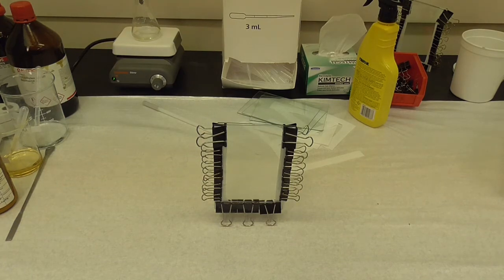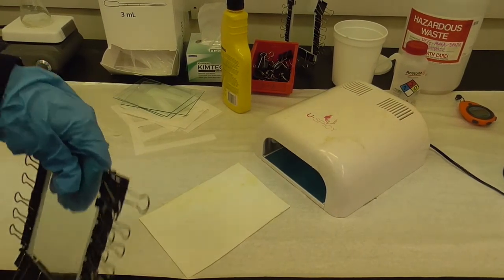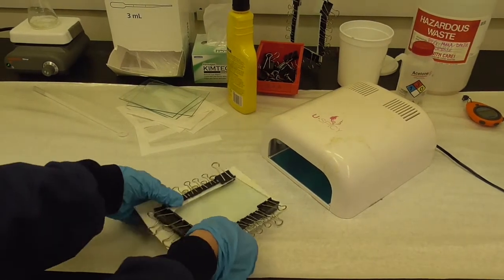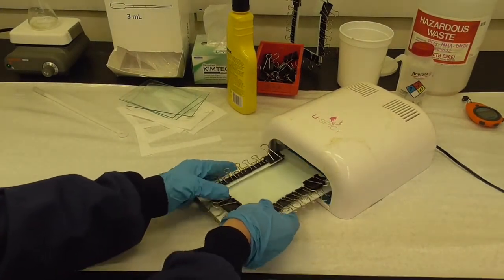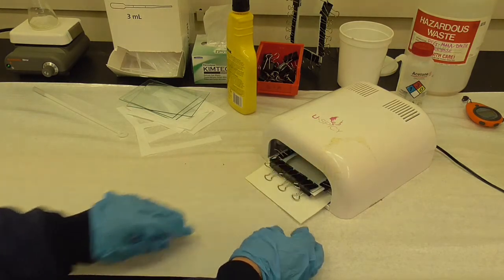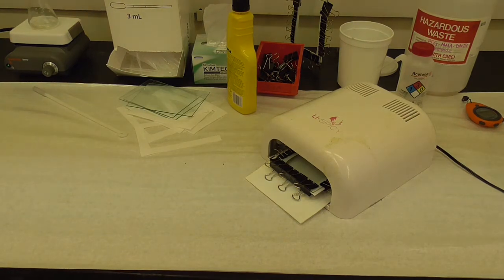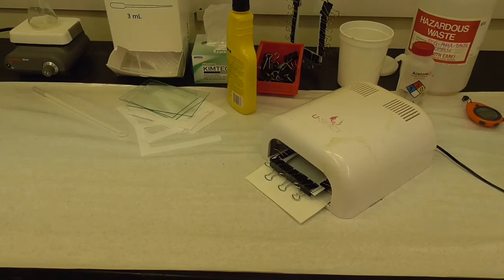So here's our mold. I'm going to make sure it fits in the UV lamp before putting polymer in. Here is the UV lamp and we will put these in this way. I put the piece of Teflon underneath in case it spills and push as far back as it goes. So it fits so I'm going to put the polymer in.